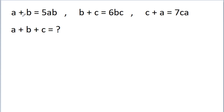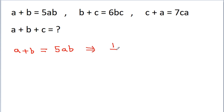We have given that a plus b is equal to 5ab, and now if we divide both sides by ab then we get 1 by b plus 1 by a is equal to 5.